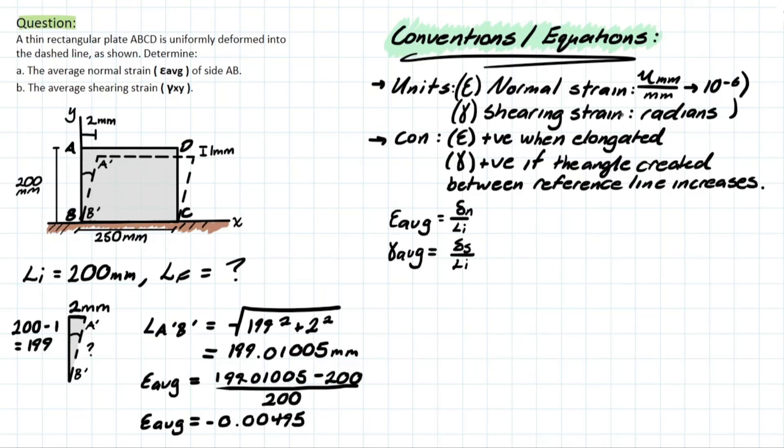Now let's look to our conventions and see what we need to do with this final answer. Now for normal strain it's typically written in micro millimeters per millimeter, which pretty much just means we're going to be adding a 10 to the negative 6 to this value. We do this just so that we don't have to write these long drawn out decimal numbers. So if we multiply this by 10 to the 6 we would actually be given negative 4950 micro millimeters per millimeter. And that would be the final answer for sigma average.